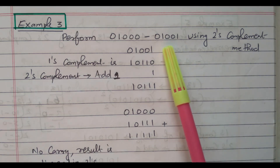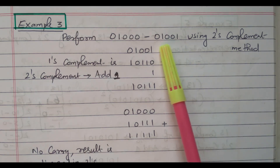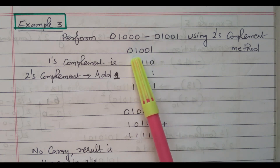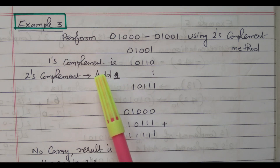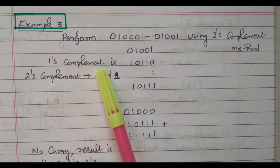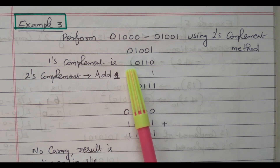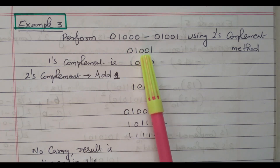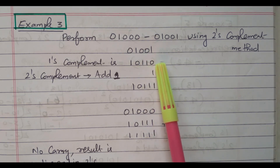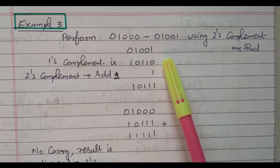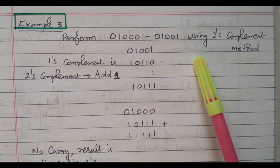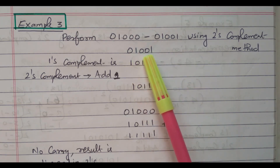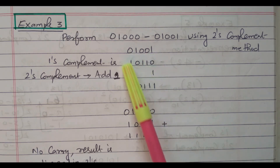Now we need to take the 2's complement of the second number. Consider the second number 01001. In order to get the 2's complement, first we will find the 1's complement. What is 1's complement? 0 is converted into 1, and 1 is converted into 0. These 2 zeros are converted into 1, 1 is converted into 0, all zeros are converted into 1, all 1's are converted into 0's. So 01001 becomes 10110.